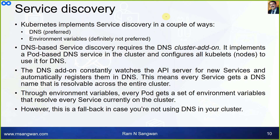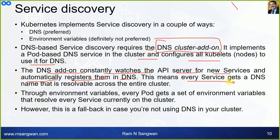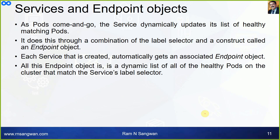Kubernetes implements service discovery in a couple of ways. First, DNS: the DNS add-on constantly watches the API server for new services and automatically registers them in the DNS. This means every service gets a DNS name that is resolvable across the entire cluster. Second, through environment variables: every pod gets a set of environment variables that resolve every service currently on the cluster. This is a fallback in case you are not using DNS in your cluster.